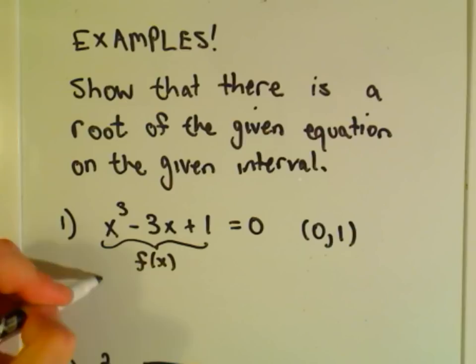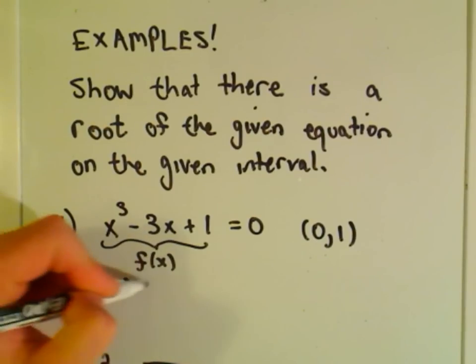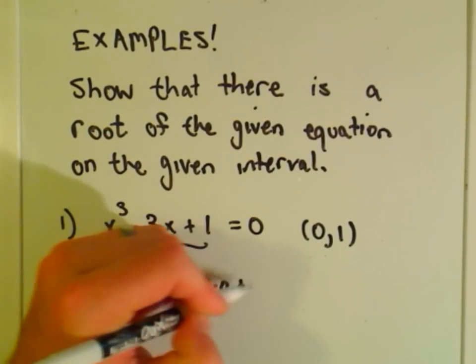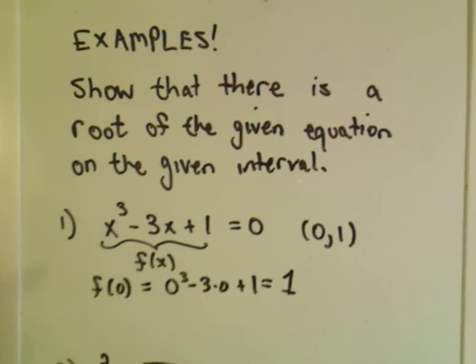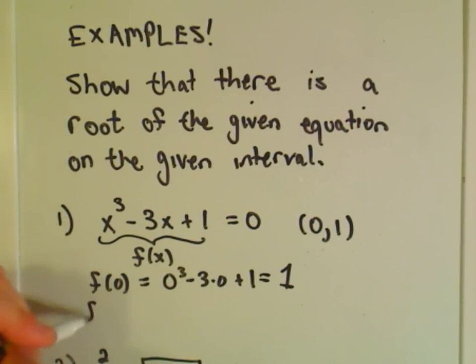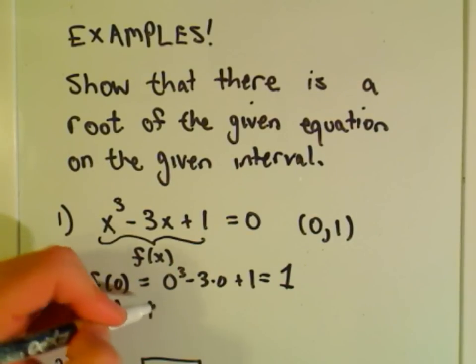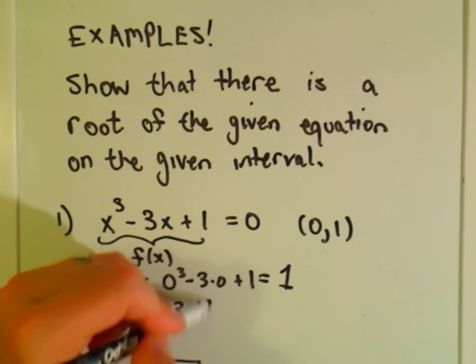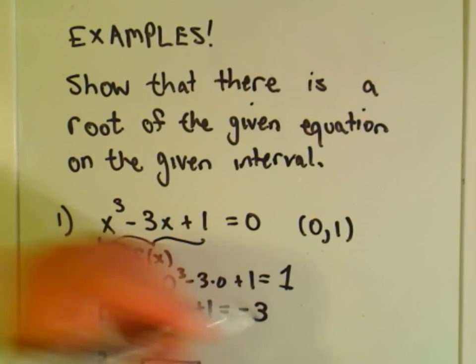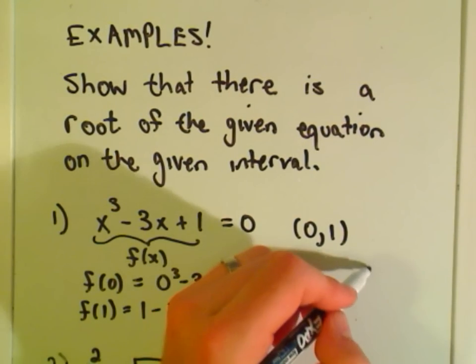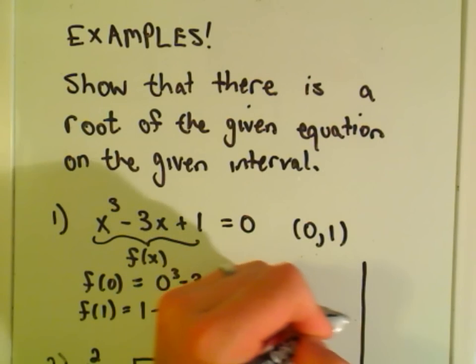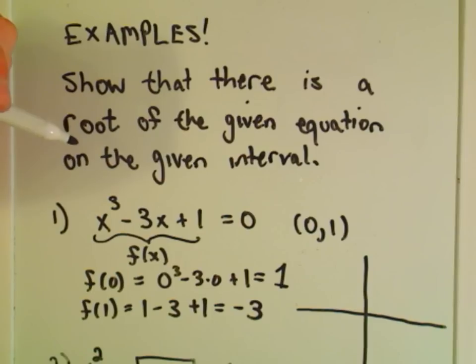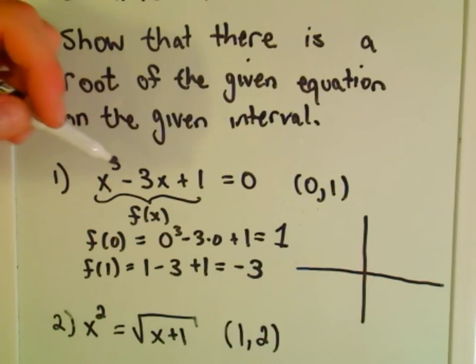Notice if you plug zero in, you'll get zero cubed minus three times zero plus one, or the value of one out. Notice if you plug one in, you're going to get one cubed, which is one, minus three times one, which is three, plus one. Well, that gives you negative three out.